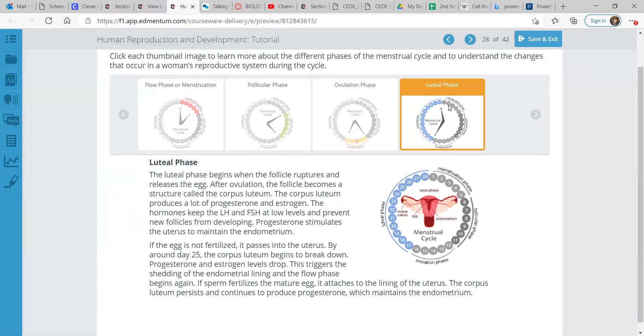The luteal phase begins when the follicle ruptures and releases the egg. After ovulation, the follicle becomes a structure called the corpus luteum, and this produces a lot of progesterone and estrogen. The hormones keep the LH and the FSH at low levels and prevent new follicles from developing. Progesterone stimulates the uterus to maintain the endometrium. If the egg is not fertilized, it passes into the uterus. By around day 25, the corpus luteum begins to break down. Progesterone and estrogen levels drop.